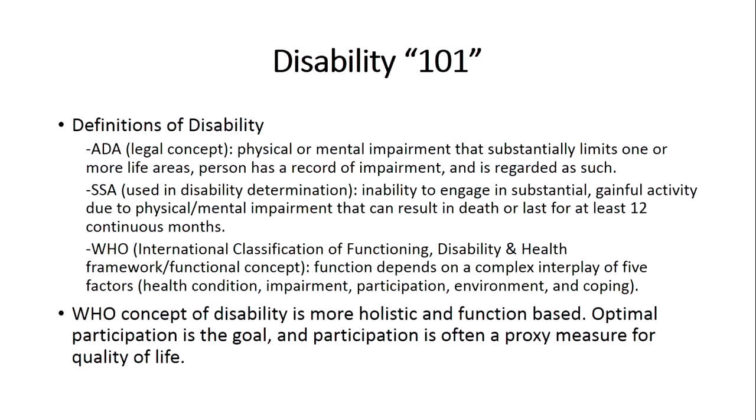Within the disability world, there are at least three definitions you commonly see. The first is the definition from the Americans with Disabilities Act, which is more of a legal concept, typically used in situations when one is alleging discrimination based on disability. The ADA definition says that a person is disabled when she or he has a physical or mental impairment that substantially limits one or more life areas, and that person has a record of that impairment and is regarded as such.